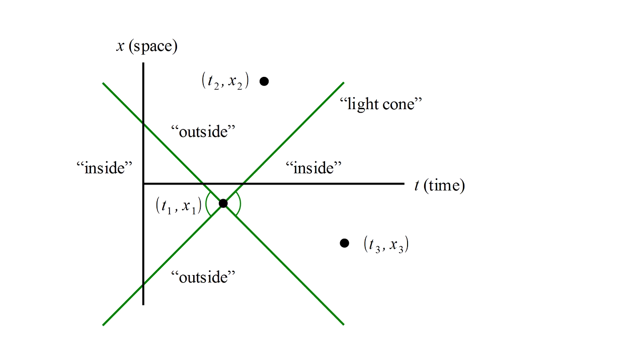Starting at event 1, we can draw lines corresponding to the propagation of light in both directions in space and into the future and the past.